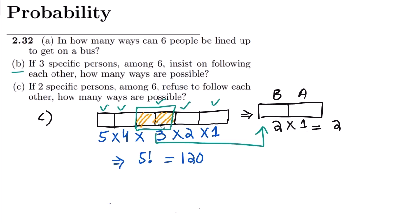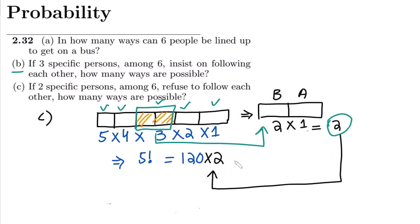The internal arrangements of the pair (2 choices) must be combined with the 120 arrangements of the five spots. Multiplying: 2 × 120 = 240. So there are 240 possible ways in which two specific persons follow each other. From Part A, the total number of ways to arrange six persons is 720.